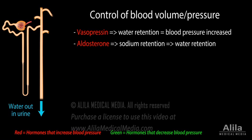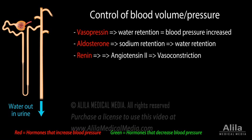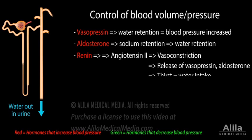The kidneys themselves produce an enzyme called renin in response to low blood pressure. Renin initiates a two-step process that produces the hormone angiotensin 2. Angiotensin 2 increases blood pressure in several ways: it constricts blood vessels, promotes the release of vasopressin and aldosterone, and stimulates thirst centers in the brain to encourage water intake.